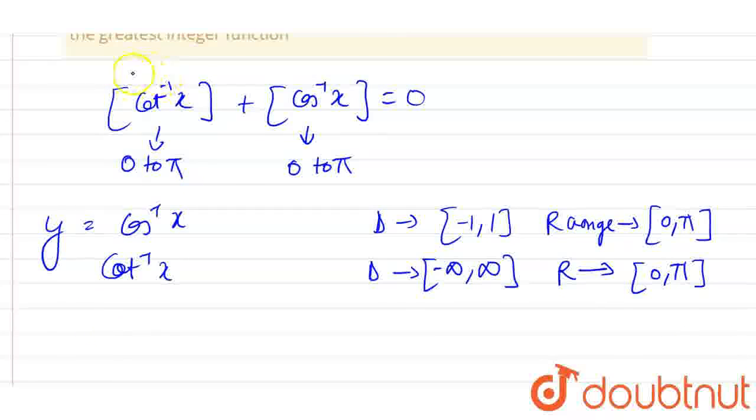If the greatest integer of cot inverse x plus greatest integer of cos inverse x is equal to 0, they have to be individually 0, because there are no similar values so that they can equate. This has to be individually 0.